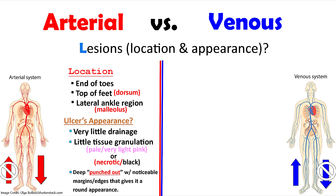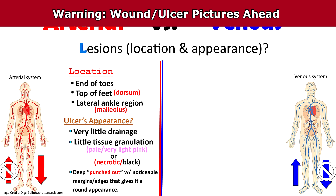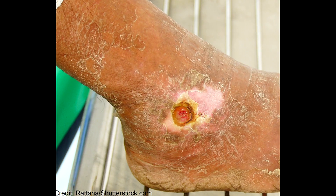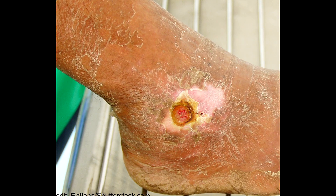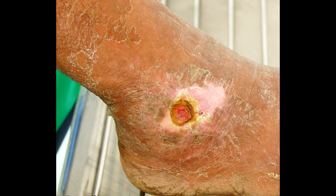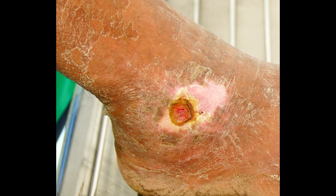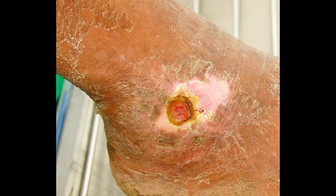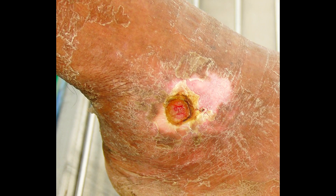Arterial ulcers tend to be pale and very light pink, or in severe cases necrotic or black. They tend to be very deep and have a punched-out appearance — it literally looks like someone took their thumb and punched out that area — which gives a noticeable wound edge and margin with a round appearance. Here's an example of an arterial ulcer: notice it's located on the lateral malleolus ankle area, it's nice and round, the wound bed is pale, doesn't have a lot of drainage, and the surrounding skin is really dry and scaly.